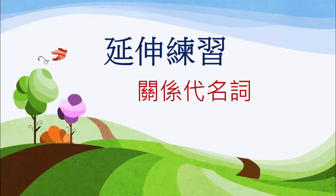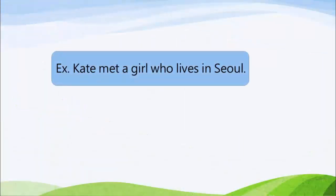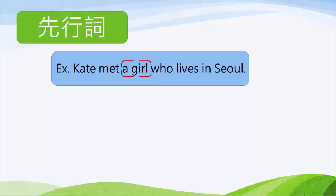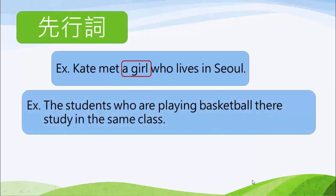我們有了一些基本的關系代名詞概念之後，現在就來做更多的練習。Kate met a girl who lives in Seoul. 我們來找找先行詞——因為我們有一個 who lives in Seoul（住在韓國首爾），修飾 a girl，所以 a girl 就是這個句子的先行詞。The students who are playing basketball there study in the same class. 這些正在打籃球的學生在同一個班級就讀，關係代名詞子句修飾的對象是 the students，就是先行詞。